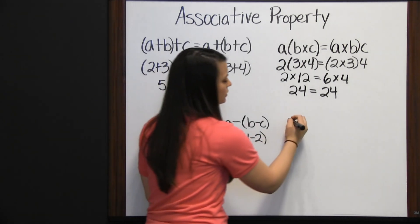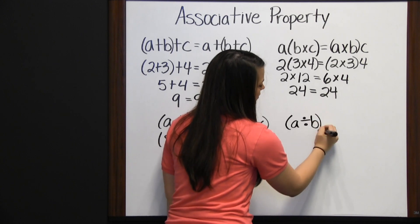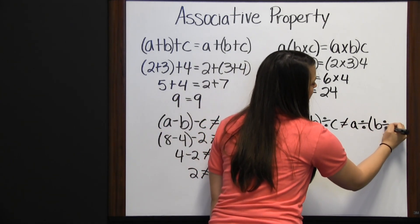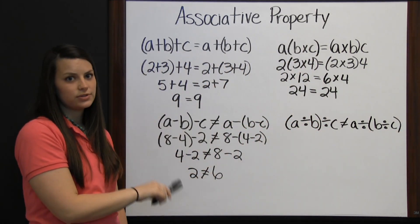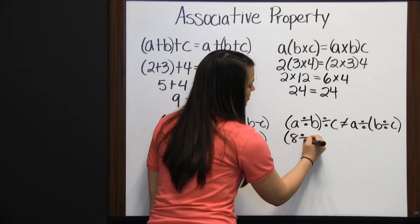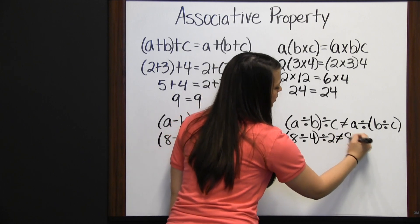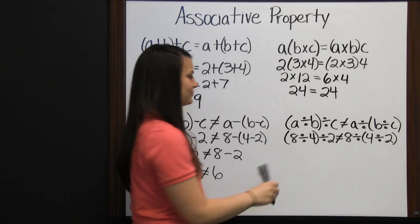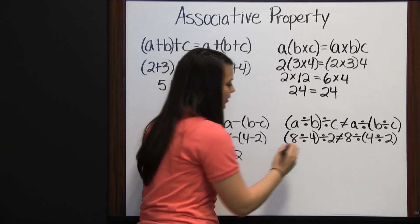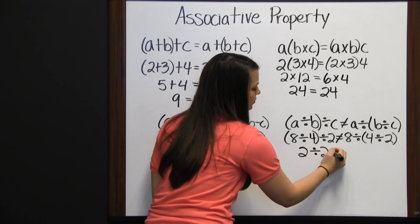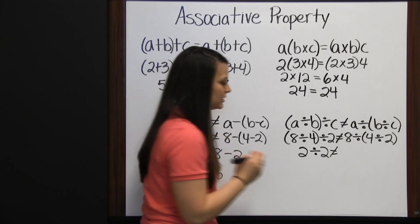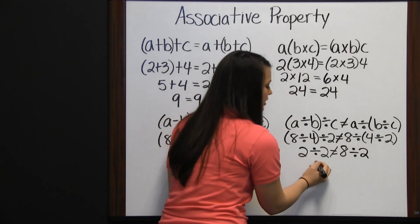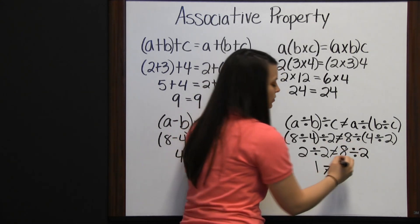Let's use it on division now. With division, it would look like a divided by b divided by c, and will not equal a divided by b divided by c. Using the same numbers: 8 divided by 4 divided by 2 does not equal 8 divided by 4 divided by 2. Order of operations — 8 divided by 4 must be done first: 2 divided by 2 does not equal, with parenthesis first, 8 divided by 4 divided by 2. 2 divided by 2 is 1, and that does not equal 8 divided by 2, which is 4.